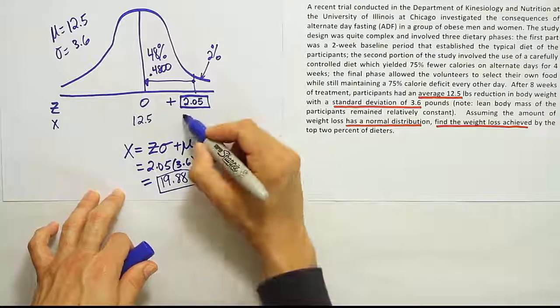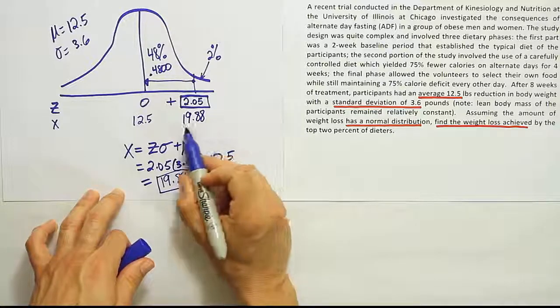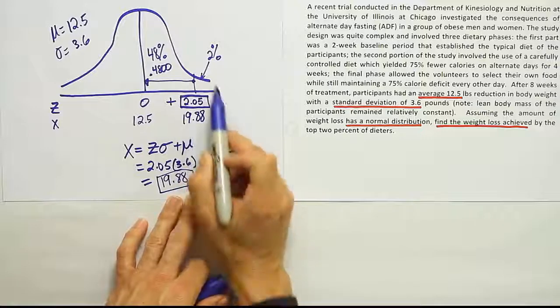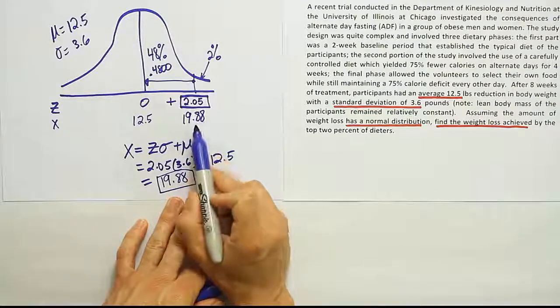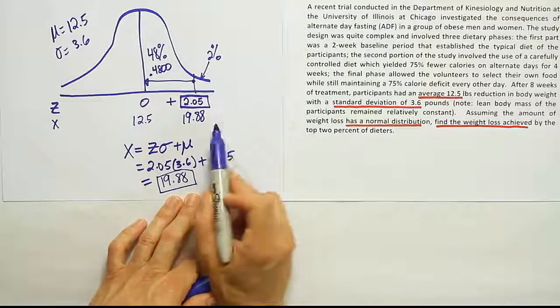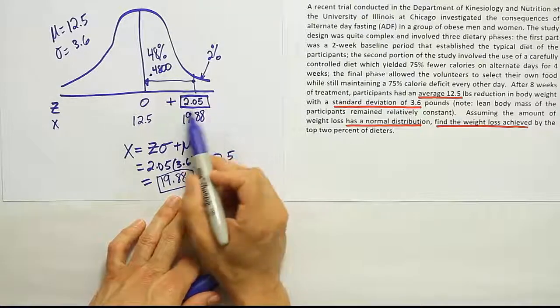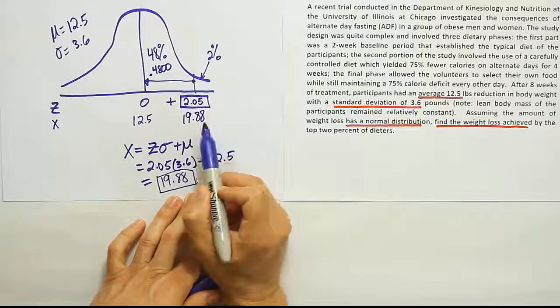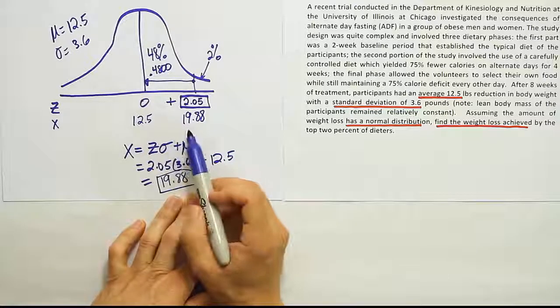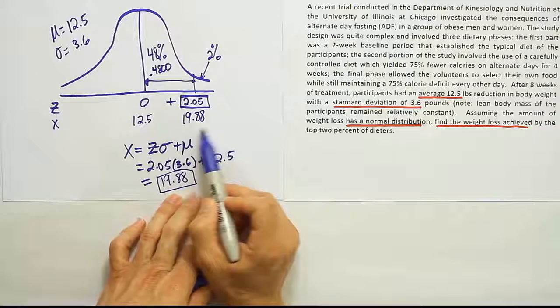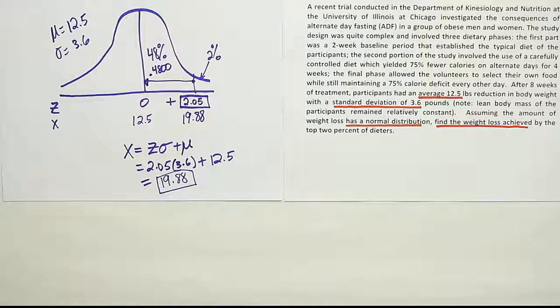So keep in mind what this is. This goes here on the curve. That's the amount of weight loss achieved by the top 2%. So these people in the top 2%, they achieved this amount of weight loss or more, depending on what part of that curve they're under, right? But basically, that's the cutoff weight loss. Any weight loss higher than that is only achieved by 2% or less of the population. The remaining 98% of the population loses less weight than this. It's quite a large amount of weight, almost 20 pounds.